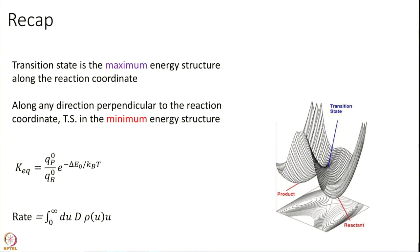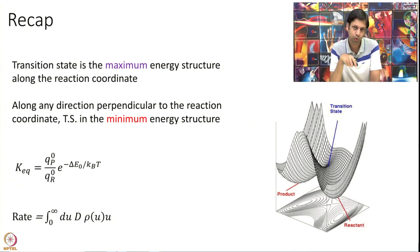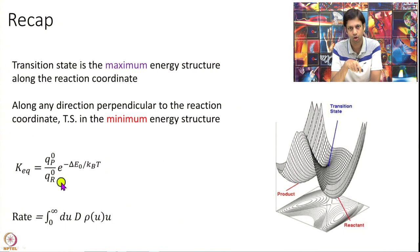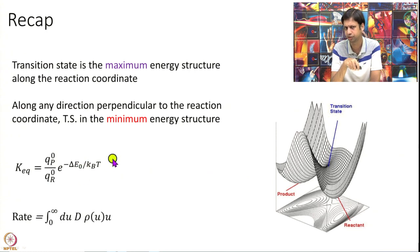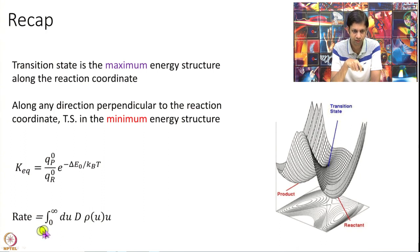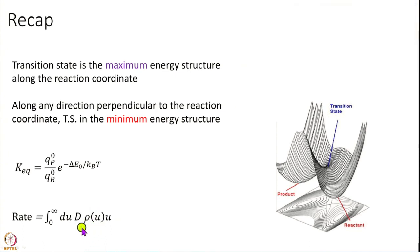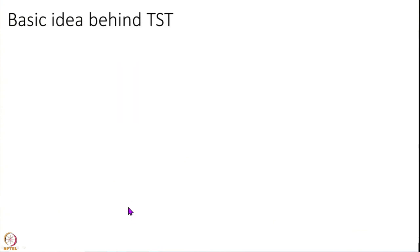We derived an important expression a few modules ago for calculating the equilibrium constant in terms of partition functions — Q_P^0 and Q_R^0 are partition functions per unit volume, divided by Avogadro's number if you want molar units. And in the last module, we derived that the rate is the integral over speeds: rho is the probability of having speed u, and u is the flux.